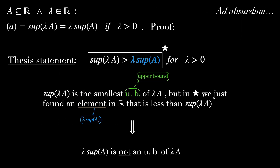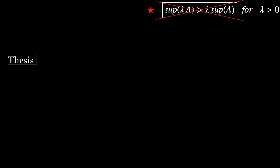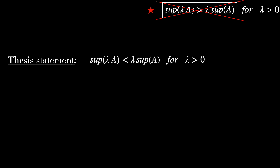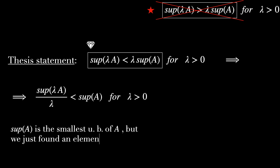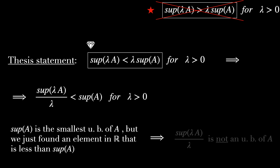We go back to our original thesis statement and cross it out, because it's not true. Now let's try the altered thesis: the supremum of lambda A is less than lambda supremum of A — we call this inequality diamond. Dividing lambda on both sides, we get that the supremum of lambda A over lambda is less than the supremum of A. Since the supremum of A is the smallest upper bound, this new element cannot be an upper bound of A.